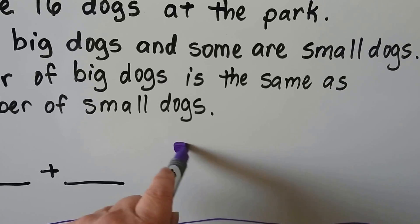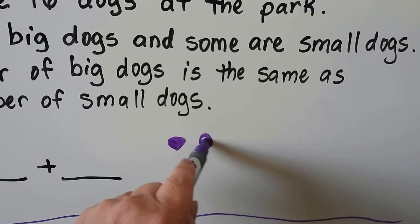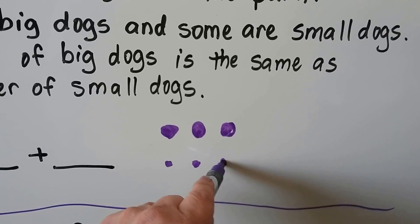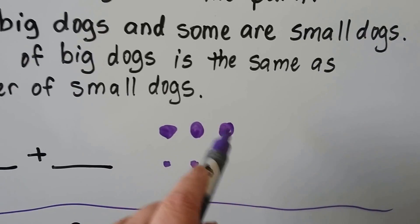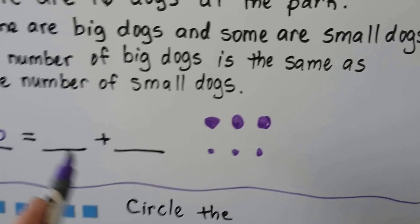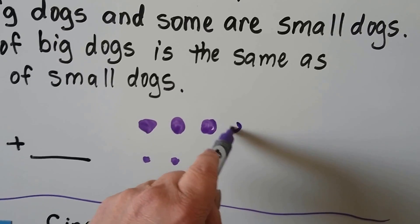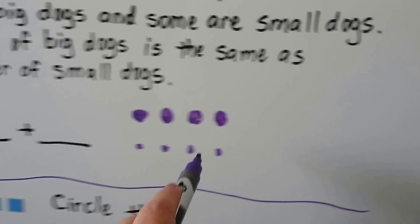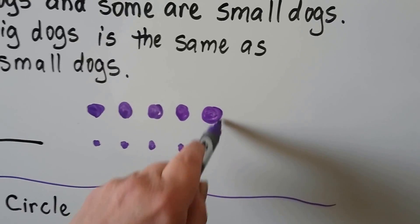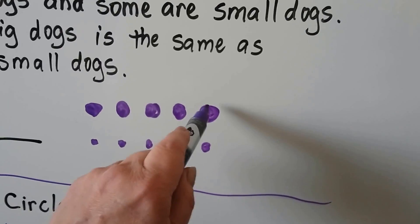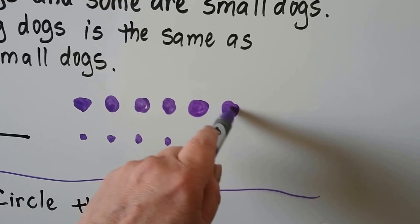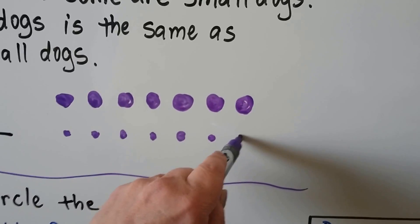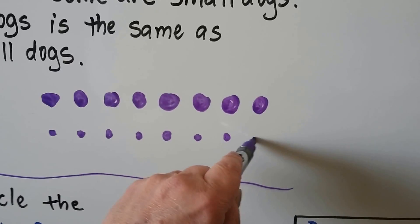What can we add together to make 16 that are doubles facts? We can make one big dog and one small dog at a time, because the numbers are the same. Counting up: 1, 2, 3, 4, 5, 6 — we need 16. Adding more pairs: 7, 8 — we need 16. Continuing: 9, 10, 11, 12, 13, 14, 15, 16.